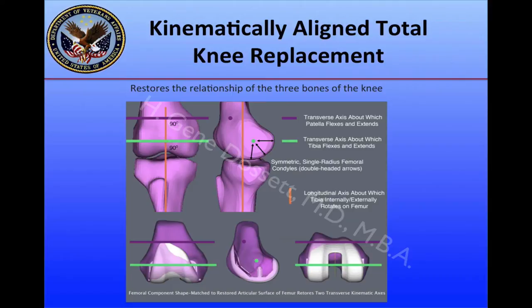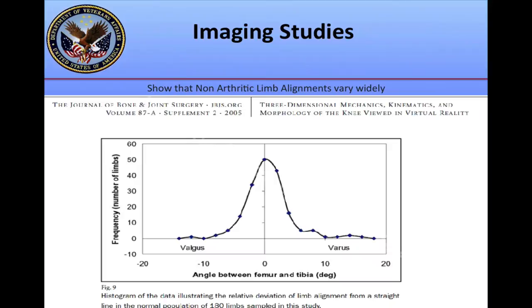This is a picture from the OtisMed Corporation that details the axis of rotation of the knee. The green line is a transverse axis about which the tibia flexes and extends. The purple line is a transverse axis about which the patella flexes and extends. And the yellow line is a longitudinal axis about which the tibia internally and externally rotates on the femur, at 90 degrees to the tibia and patella axis.